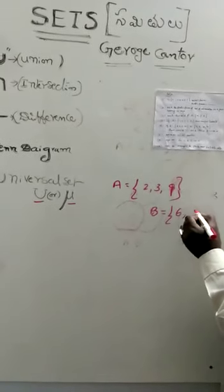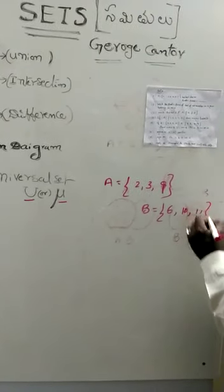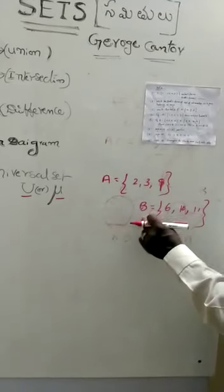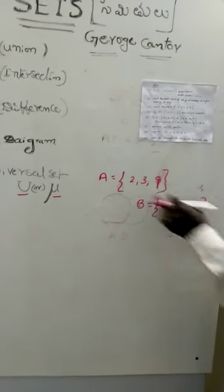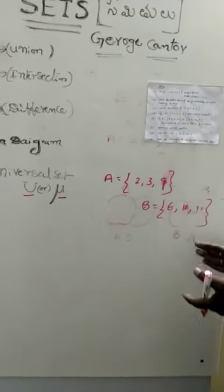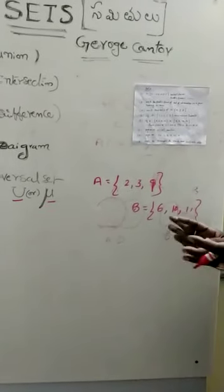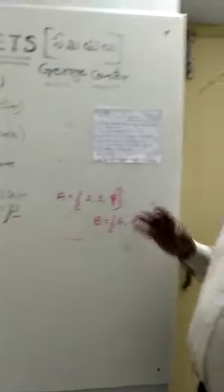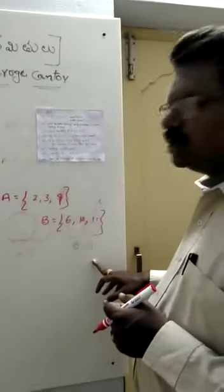A = {2, 3, 9} and B = {6, 10, 11}. There are no common elements in these sets. Like this, these sets are called disjoint sets. They asked for the Venn diagram of disjoint sets.